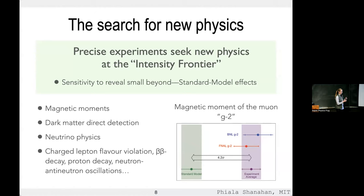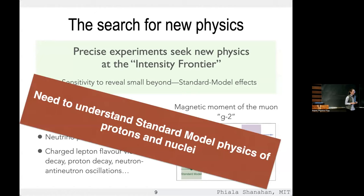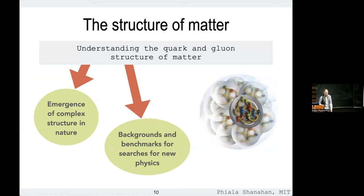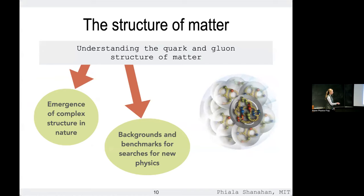What all these experiments have in common is that you need to know the Standard Model physics of protons or nuclei — you need the Standard Model prediction for g minus 2 to compare to experiment, and you need to know the Standard Model physics of nuclei in your dark matter detector to disentangle nuclear effects from dark matter signals. This motivates first-principles study of the structure of protons, neutrons, and nuclei directly from the Standard Model: first for its own sake — can we see how nuclear reactions emerge from this fundamental theory? — and second, to provide backgrounds and benchmarks for searches for new physics.